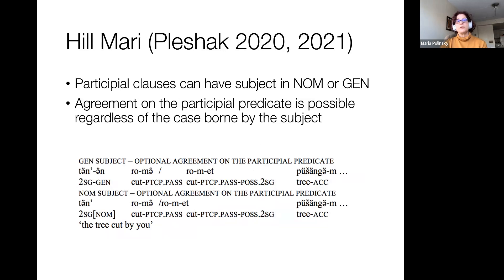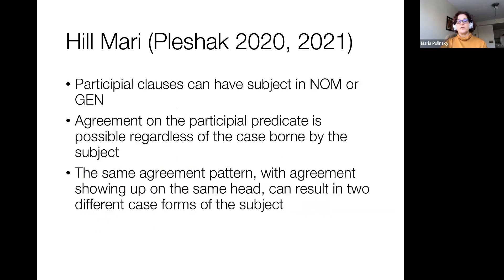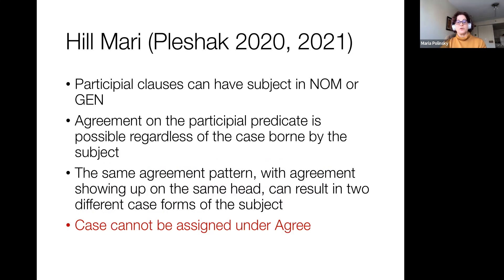There is work by Paulina Plaschak on Hilmari where she shows that participial clauses in Hilmari can have a subject either in the nominative or in the genitive, and agreement on the participial predicate is possible regardless of the case borne by the subject. So you have two examples of 'the tree cut by you': one with the subject in the genitive, one in the nominative — but in both cases agreement is possible. That indicates that agreement is separate from case: the same agreement pattern on the same head appears with two different case forms of the subject.